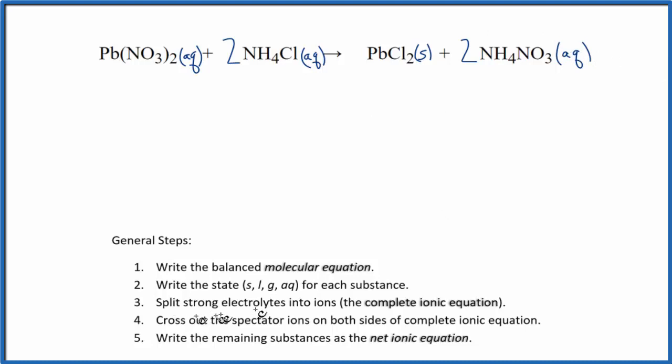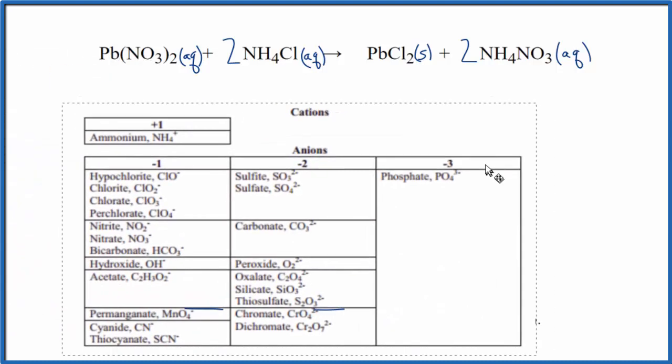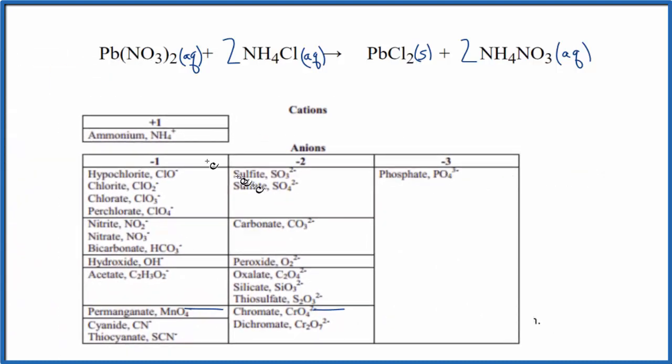Next, we can split the strong electrolytes into the ions, so we need to think about charge to do that. If we look at the nitrate, we can look the nitrate up on a table of common polyatomic ions. Let's pull a table in here. If we find the nitrate, that's right here. It's NO3 minus, so that has a negative charge of 1 minus. Since we have two of them, the lead is going to have to be 2 plus.